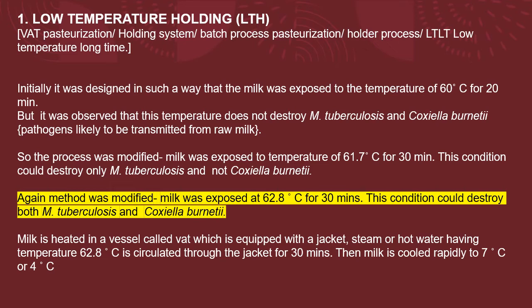In LTH, milk is heated in a vessel called a vat, similar to a fermenter. It is equipped with a jacket through which steam or hot water at 62.8°C is circulated for 30 minutes, allowing heat exchange from hot water or steam to the milk. After 30 minutes, milk is cooled rapidly to 7°C or 4°C. Rapid cooling of milk is also important in pasteurization.